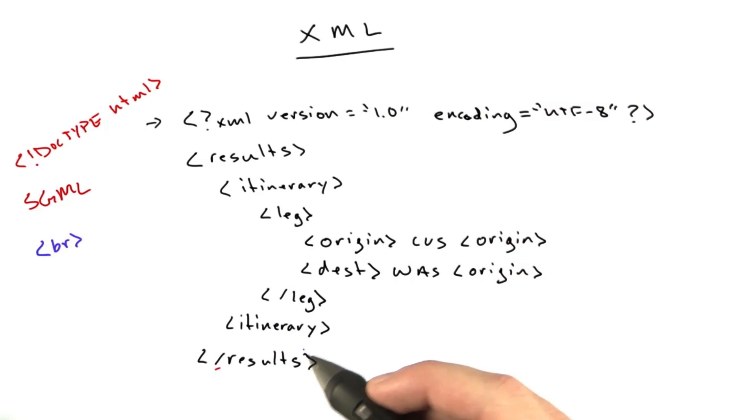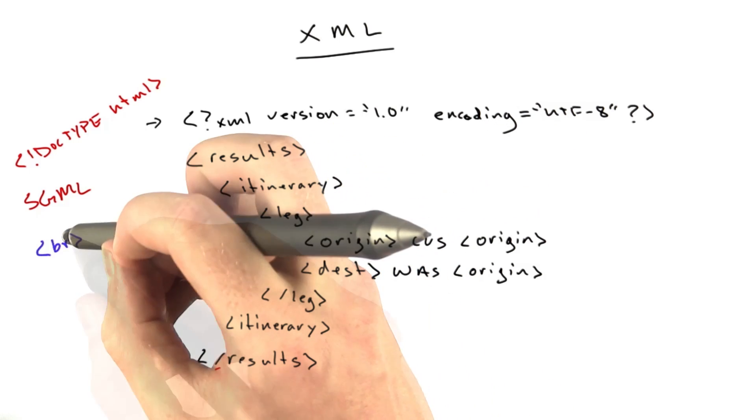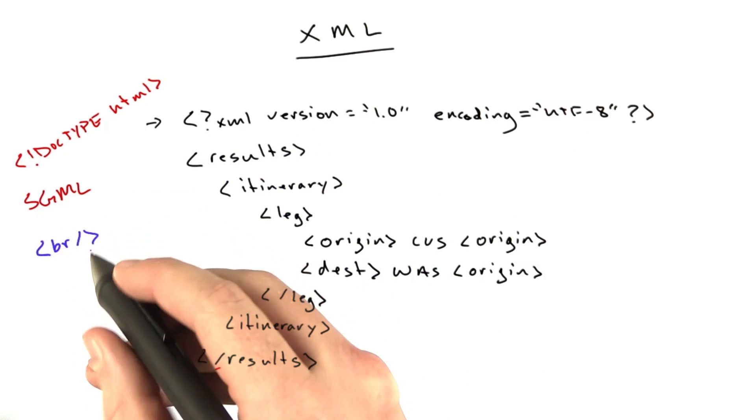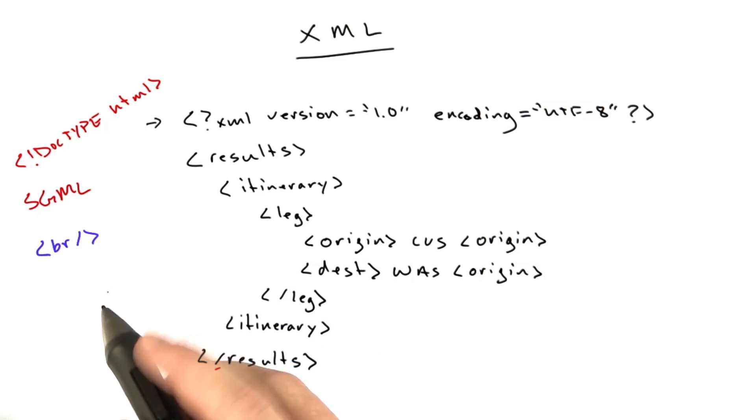XML has nothing like that. Now, if you want a tag that has no content in XML, you could do something like this. You could include a closing slash before your greater than symbol.